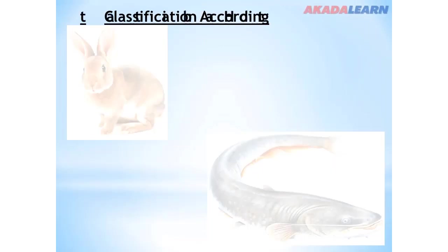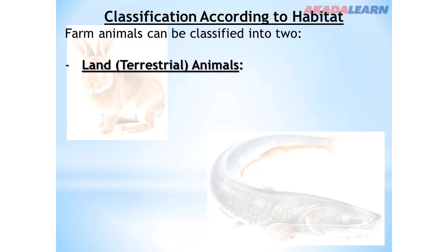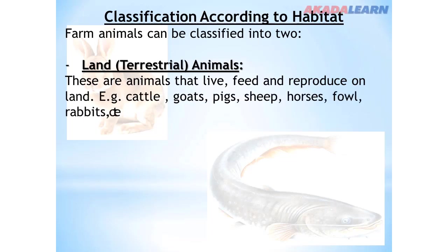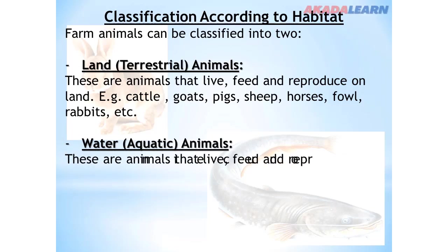Classification according to habitat: based on habitat, farm animals can be classified into land or terrestrial animals and water or aquatic animals. Terrestrial animals are animals that live, feed, and reproduce on land. Examples include cattle, goats, pigs, sheep, horses, fowl, rabbits, and many more.